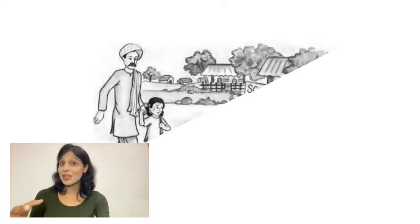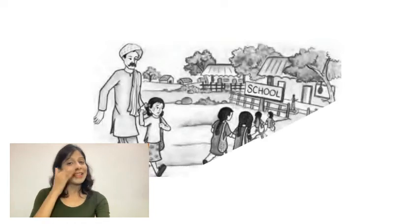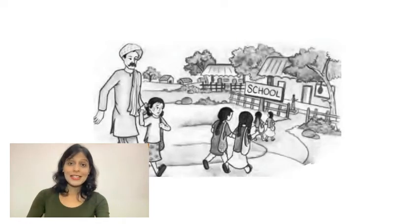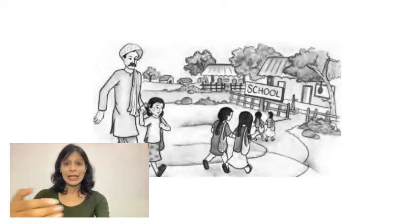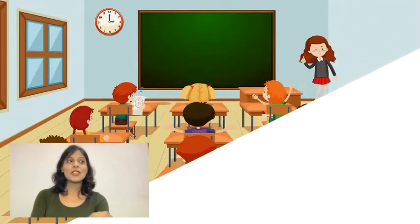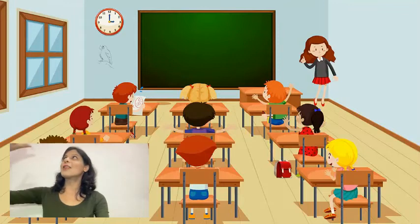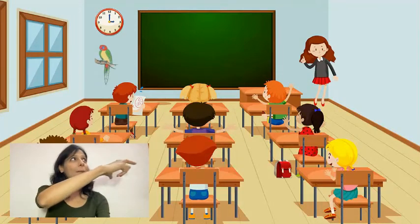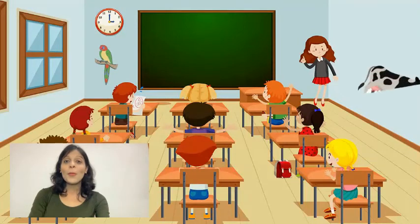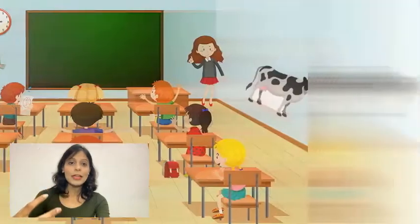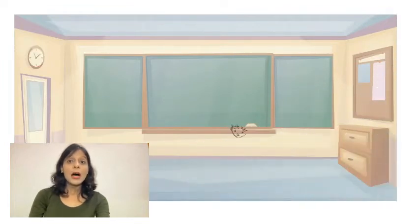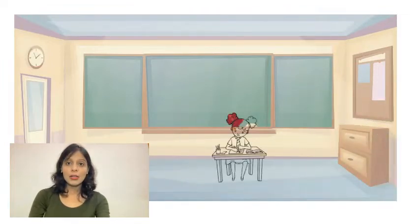Upon reaching the school, Bholy's eyes were full of fear, because it was the first time she had gone out of home. In the class, the lady teacher was teaching something, but Bholy was looking at the walls and the charts — there were animals like the parrot and the cow, which reminded her of Lakshmi. When the teacher asked Bholy her name, she stammered — 'Bho, Bho, Bho' — and couldn't speak.